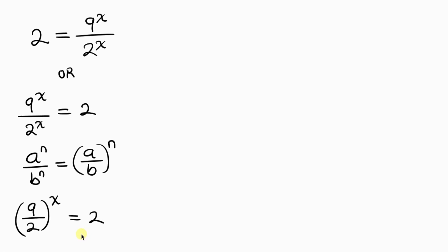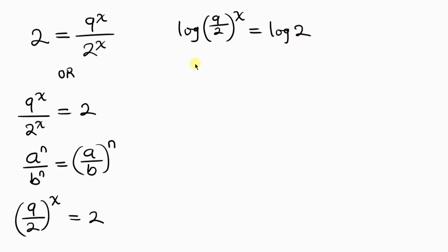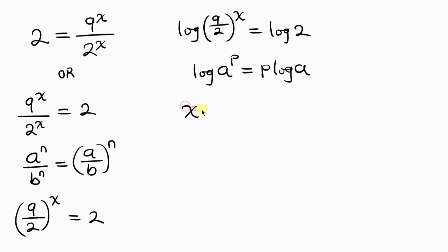Our next step is to take the log of both sides: log of 9 over 2 raised to the x equals log 2. We then apply the logarithm property log of a to the p equals p log a, so the left hand side becomes x times log of 9 over 2.